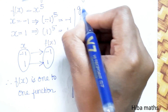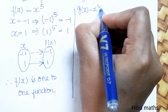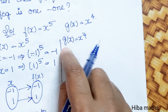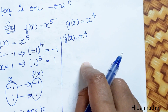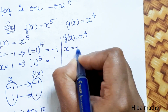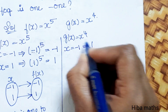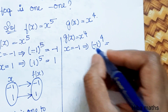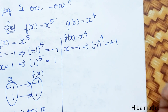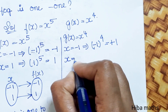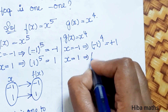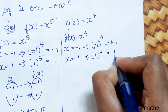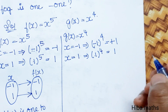Now for g(x): g(x) = x^4. I will substitute values. For x = -1: (-1)^4 = 1. For x = +1: (1)^4 = 1. So both x = -1 and x = 1 give the same output value of 1.